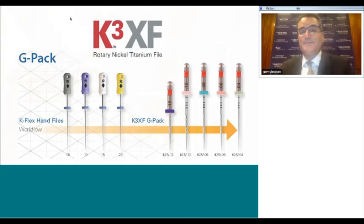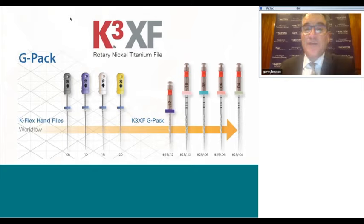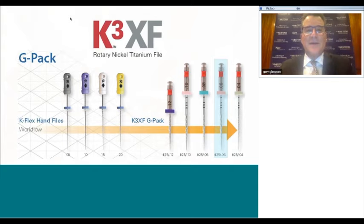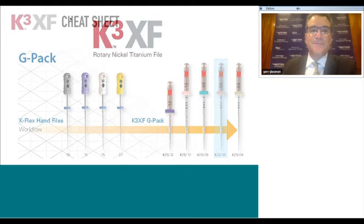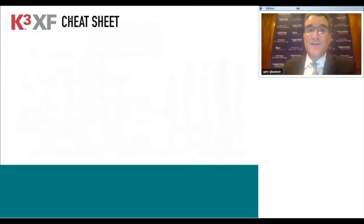Here's the K3XF—extra flexible—the K3 many of you know, now heat treated. Heat treating nickel titanium increases flexibility and resistance to cyclic fatigue. When using K3XF in a crown-down manner, I always aim to get to a 06 taper with 25 tip size. If I can't reach working length at the 06 without excess pressure, I go to the 04; if the 04 reaches working length, I recapitulate with the 06 to follow the pathway created by the 04. That's called the GPAC. I'm happy to send you the K3XF cheat sheet—just send me your email.